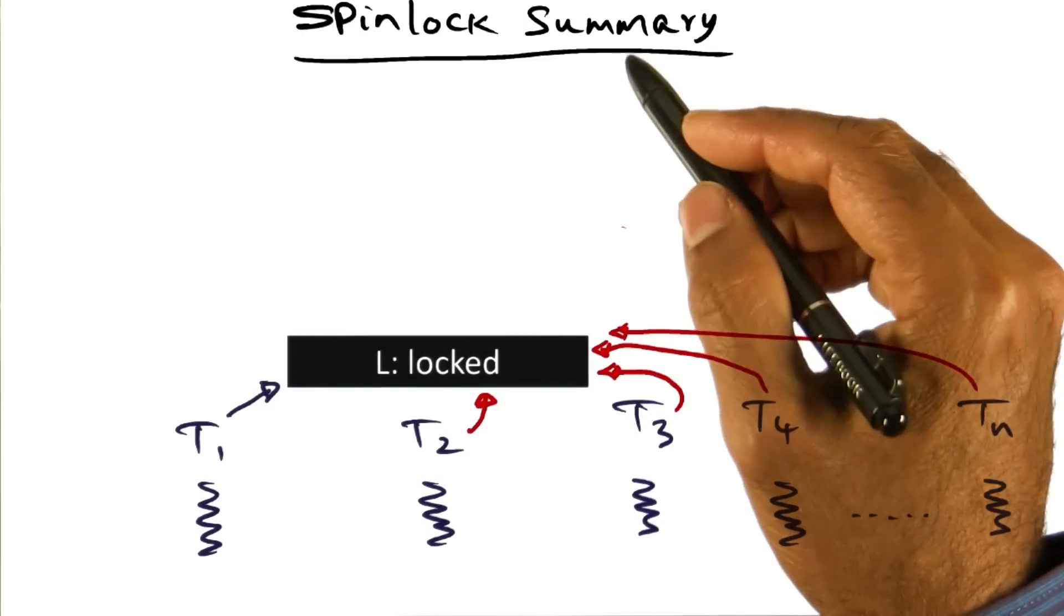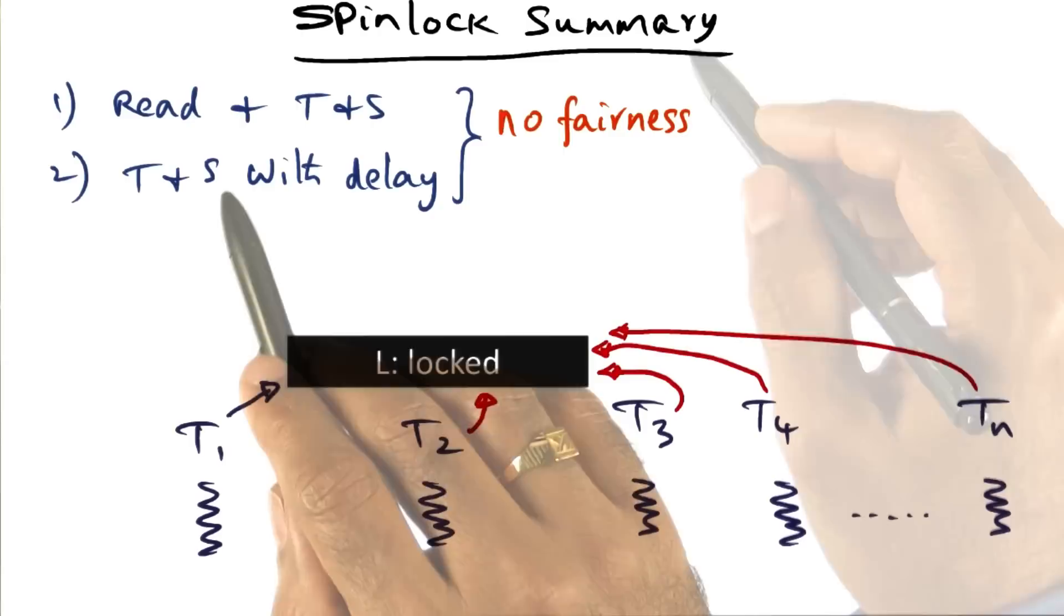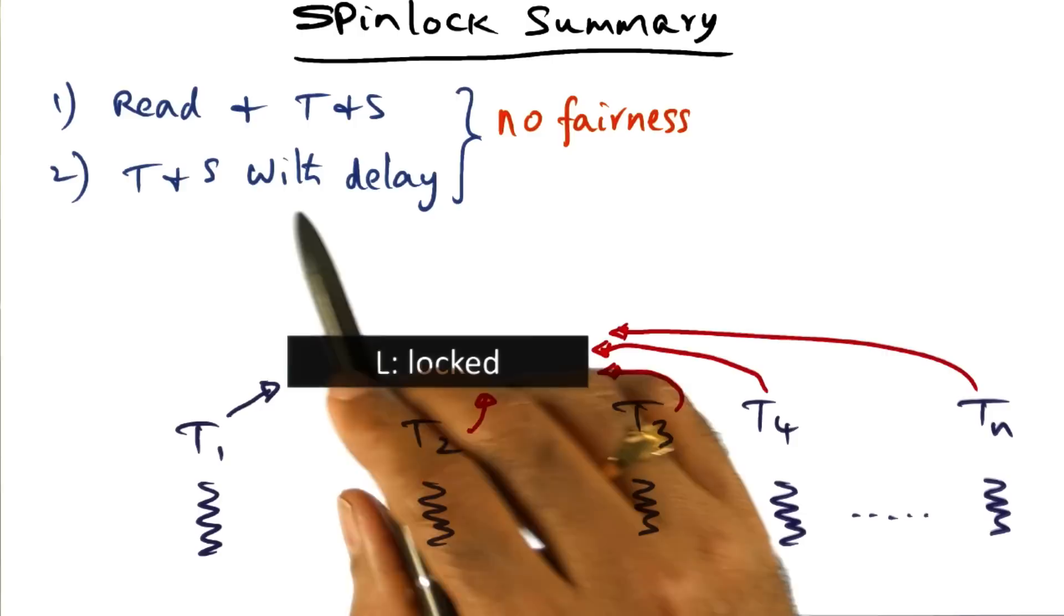To summarize the spinlock algorithms we've seen so far: we saw the read, spin on read, and spin on test and set, and spin on test and set with delay.